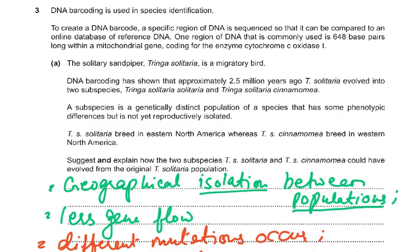Question 3 is about DNA barcoding, used in species identification. To create a DNA barcode, a specific region of DNA is sequenced and compared to an online database of reference DNA. One region commonly used is 648 base pairs long — a mitochondrial gene coding for the enzyme cytochrome C oxidase 1.